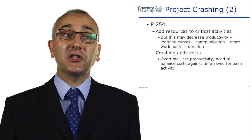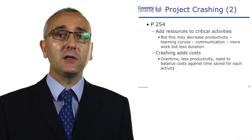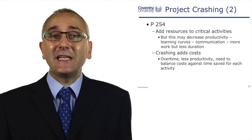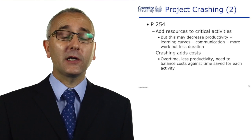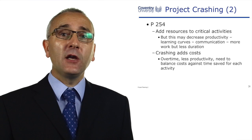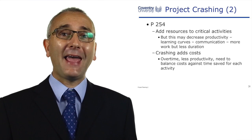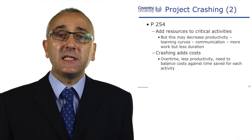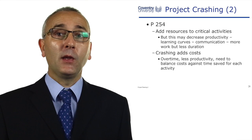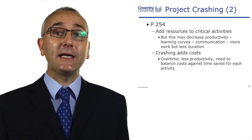Gardner suggests that adding resources might actually decrease productivity. If you put two people on the task, they've got to communicate with each other, which could actually increase the work for the task. An example: you've got 20 hours to deliver a piece of software — 20 hours of effort. Somebody says this is going to take three or four days to complete. The task is on the critical path and we need to speed it up.